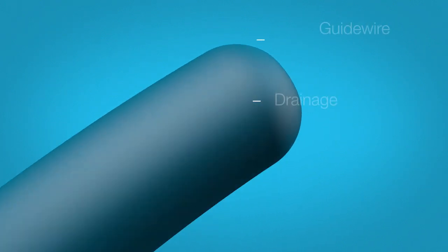The DirectVision system also has the expanded capability of using its drainage lumen and council tip as a working channel to allow urologists to visualize guidewire navigation and placement.